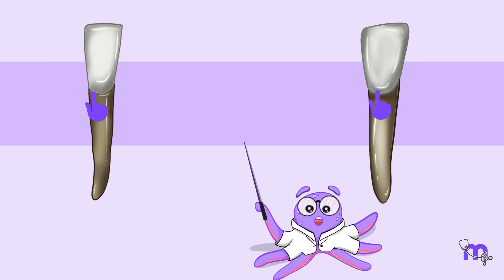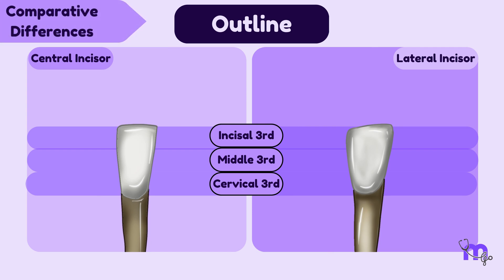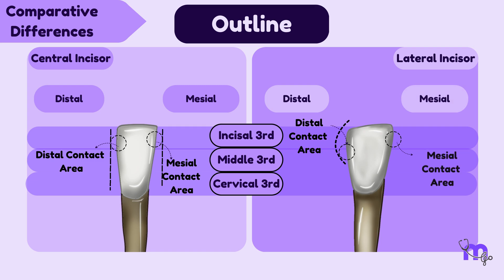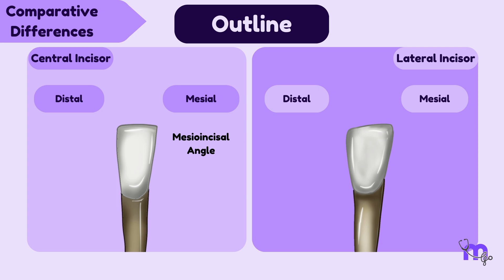Now, let's trace the mesial and distal outlines of these teeth. Here, we can note the next comparative difference. In the central incisor, both the outlines exhibit straight lines and the contact areas are positioned close to the incisal edge. Conversely, in the lateral incisor, the distal outline takes on a subtle convex shape, causing the contact area to be located most cervically compared to the mesial contact area. Additionally, while both the mesioincisal and distoincisal angles in the central incisor are sharp, in the lateral incisor, the distoincisal angle appears rounded.